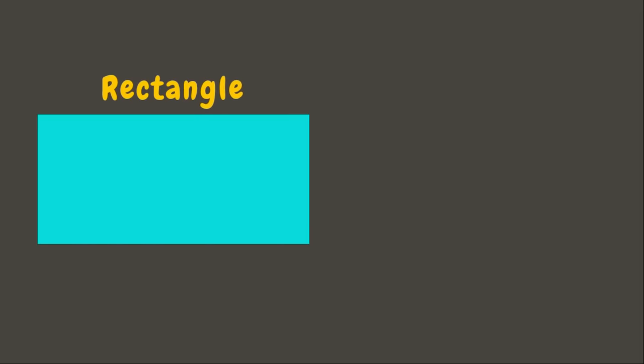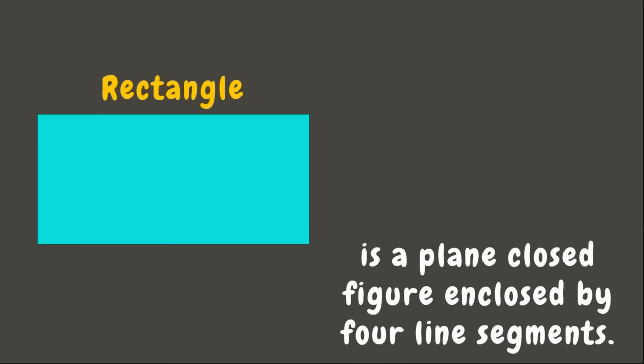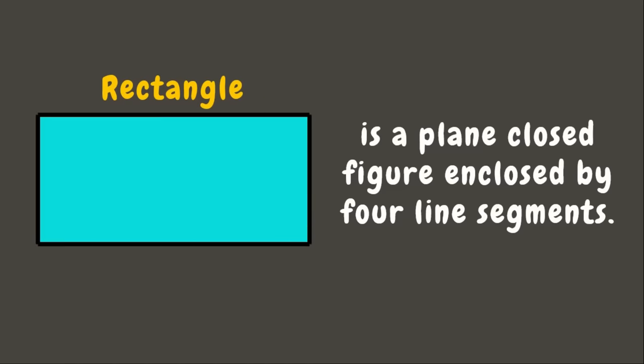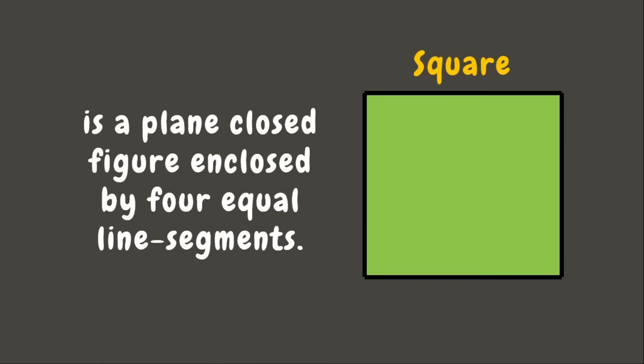The first one is a rectangle. A rectangle is a plane figure enclosed by four line segments. It has two pairs of equal sides — the lengths and the widths. Next, we have a square. A square is a plane figure enclosed by four equal line segments.